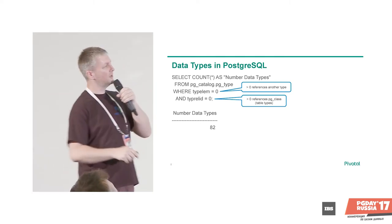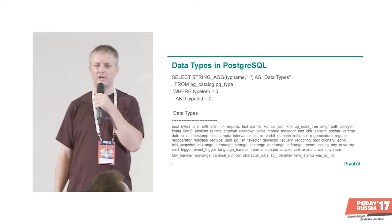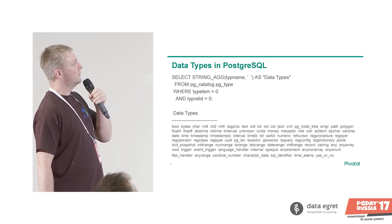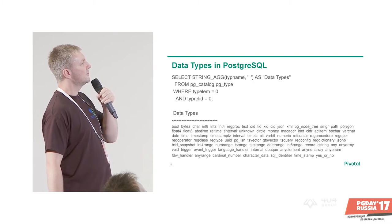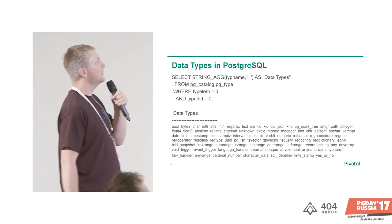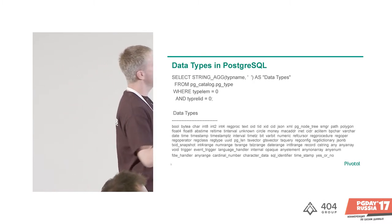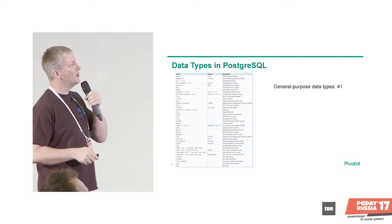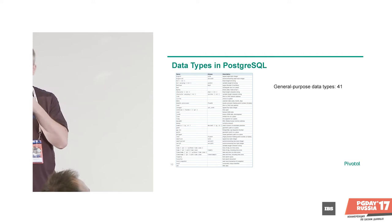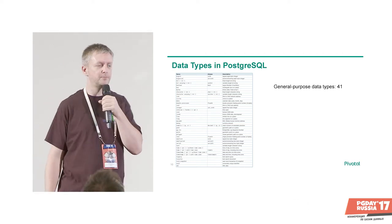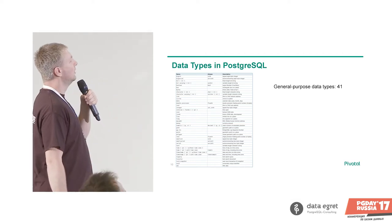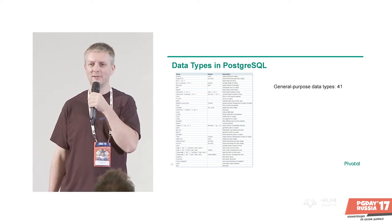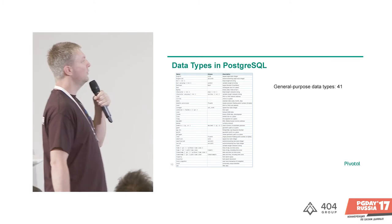That's by the way a full list, excluding all the table types. Luckily we also have nice documentation in Postgres, so if you go to the Postgres website and click on documentation, you see this complete list and a short explanation of what each type does — and it still only lists 41 of them, not all 82. We only look at a few of them here.